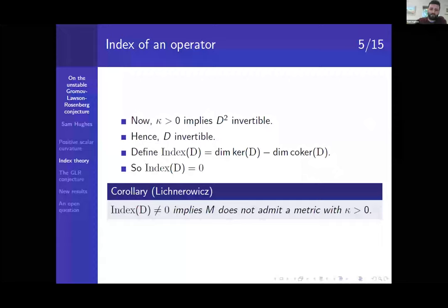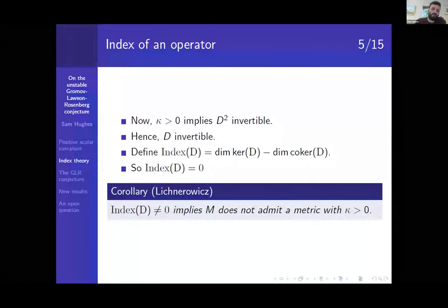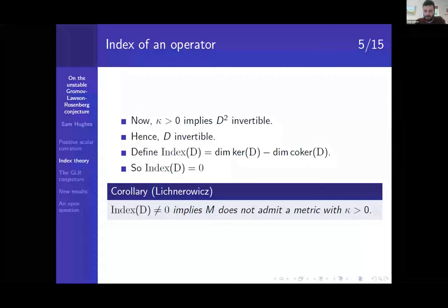At the moment, this is still very much in the realm of geometry, and we're not really looking at the topology, but we're going to get to how they connect. So if κ is greater than zero, this D² is now invertible, so D is invertible. So we can define an index, which is going to be the dimension of the kernel of D minus the dimension of the co-kernel. And of course, if D is invertible, then this is zero because the dimension of the kernel, the dimension of the co-kernel is zero. So the corollary of this, due to originally due to Lichnerowicz, is that if the index is non-zero, then M cannot admit a metric with a positive scalar curvature. But we're still in the realm of functional analysis here. We haven't, we're not in the realm of topology yet.